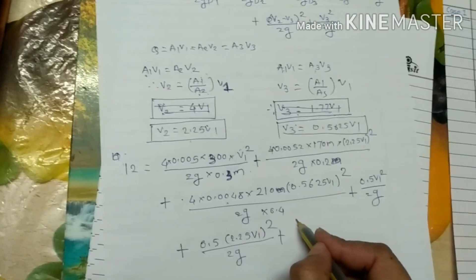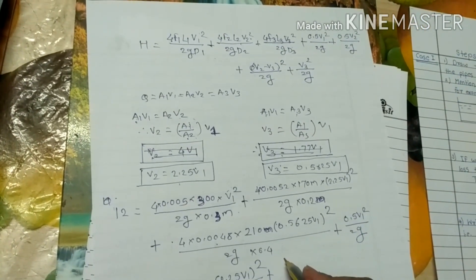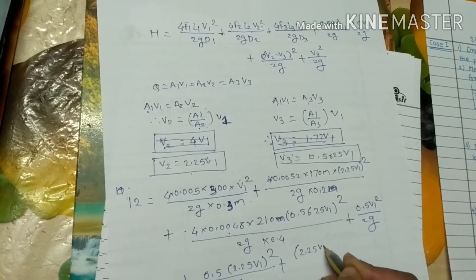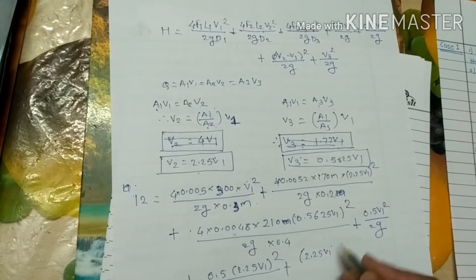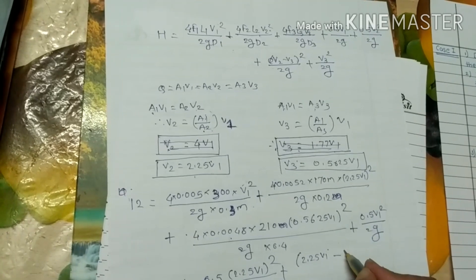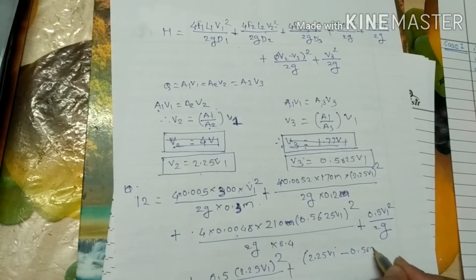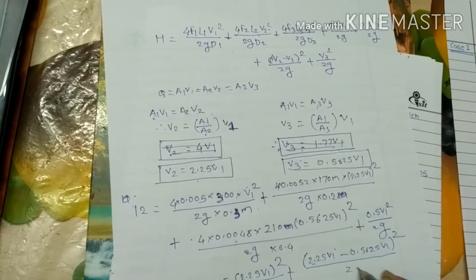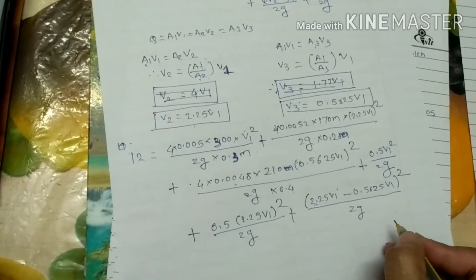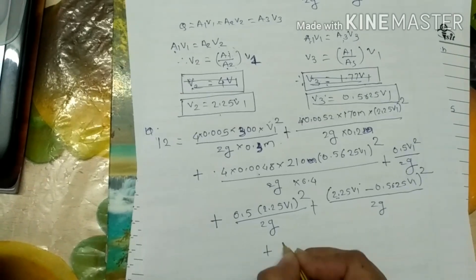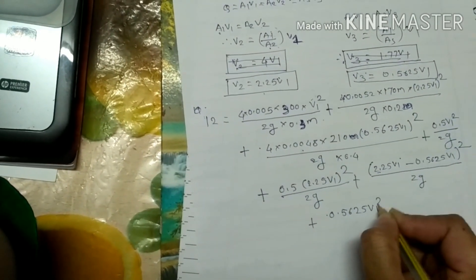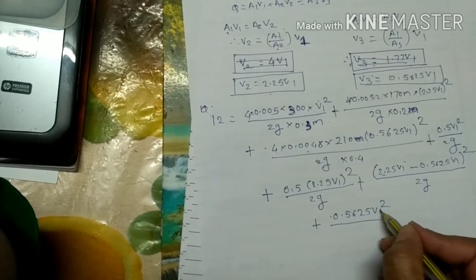The expansion loss formula is (v2 - v3)² / 2g, so substitute: (2.25·v1 - 0.5625·v1)² / 2g. Be careful here — silly mistakes will lose your marks. Lastly, the exit loss: v3² / 2g = (0.5625·v1)² / 2g.